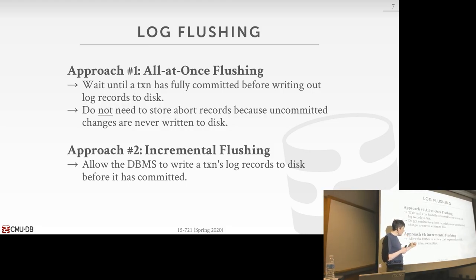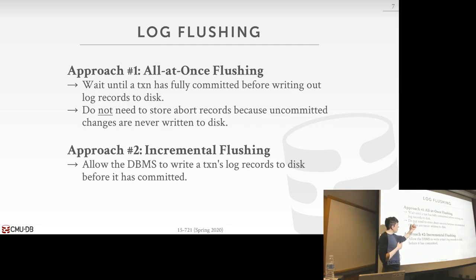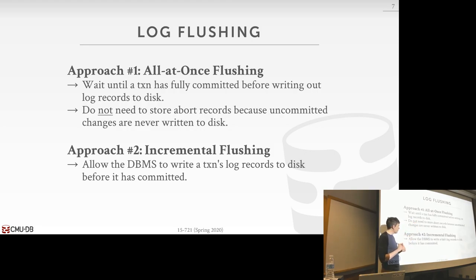The other approach is incremental flushing. As transactions accumulate log records, when their local log buffer gets full they hand it to a writer thread to start writing to disk and get a new buffer. This means if there's a crash, the log may contain records from transactions that did not commit yet. For the all-at-once approach, recovery is easier because you'll almost never see log records from uncommitted transactions — except if a crash occurred mid-flush before the commit record was written.